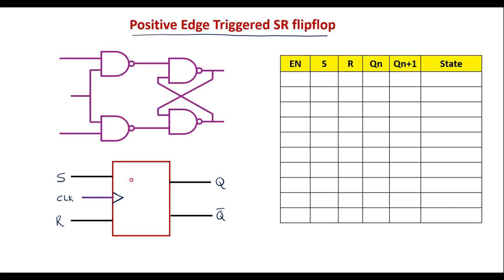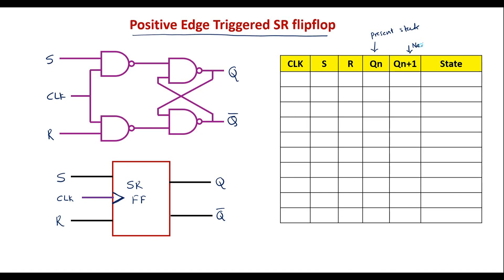For the positive edge-triggered SR flip-flop, the block diagram is represented with a mark indicating it is a positive edge-triggered flip-flop. The inputs are S (set input), R (reset input), and CLK (clock input), with two outputs Q and Q-bar. This is also the circuit diagram implemented using NAND gates. Let Qn be the present state of the flip-flop and Qn+1 be the next state — the response of the flip-flop after applying the clock pulse.